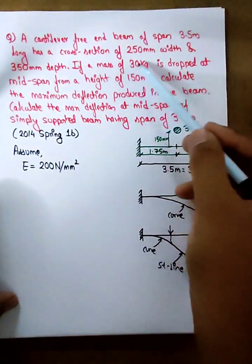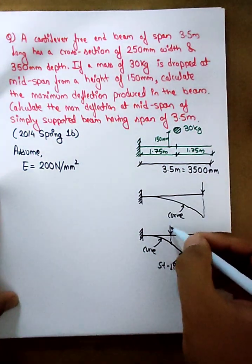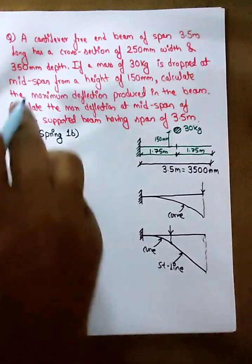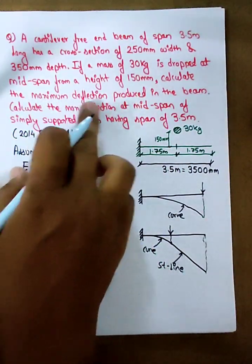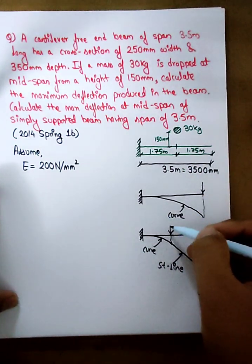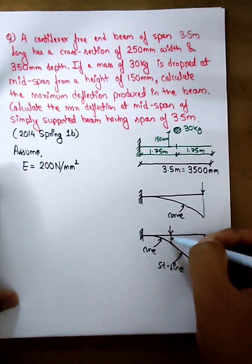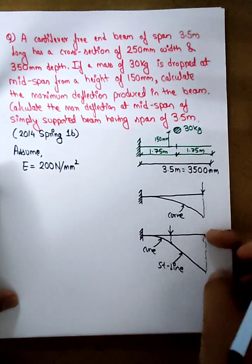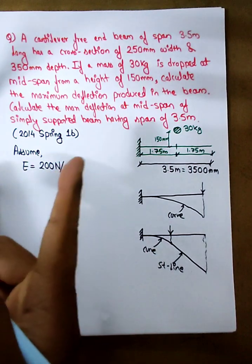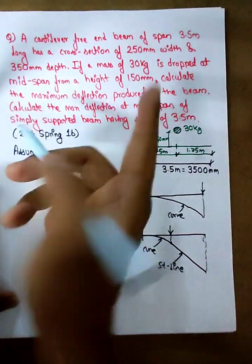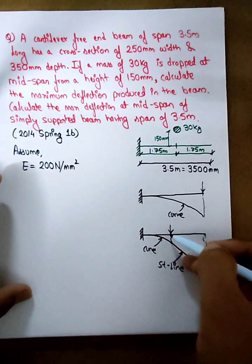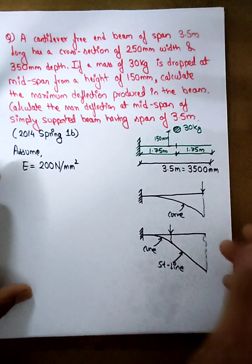A mass of 30 kg is dropped here at the mid-span. Calculate the maximum deflection produced in the beam. Since the 30 kg load is dropped at mid-span of a cantilever, the maximum deflection occurs at the free end. This is the case of a 30 kg impact load, and we need the maximum deflection.